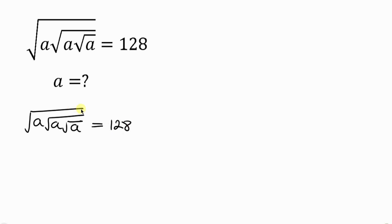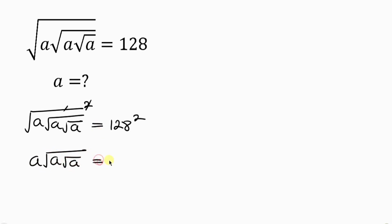Our first step will be to get rid of this outer square root by taking the square of both sides. We see that this square cancels out this square root, leaving behind A times the square root of A times the square root of A, to be equal to 128 squared.